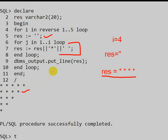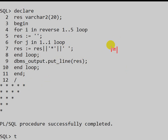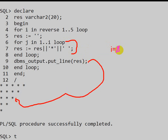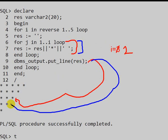Then i becomes 3, so the inner loop iterates 3 times and 3 stars are printed. Then i becomes 2, so the loop iterates twice and 2 stars are printed. Finally, i becomes 1, the loop iterates only once, one star is concatenated, and one star is printed.